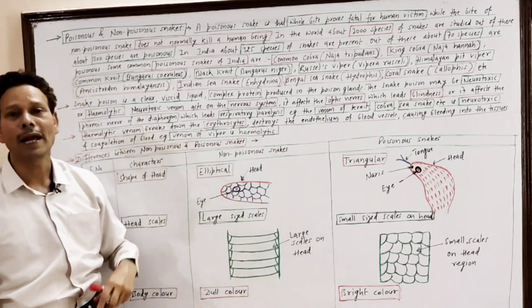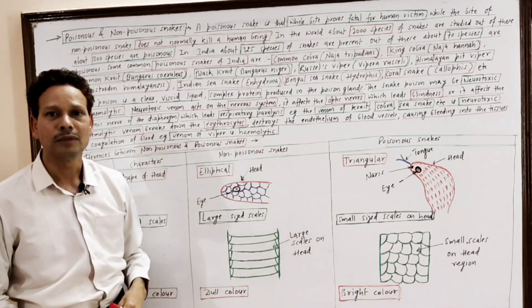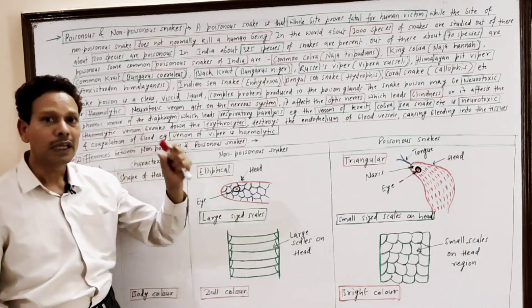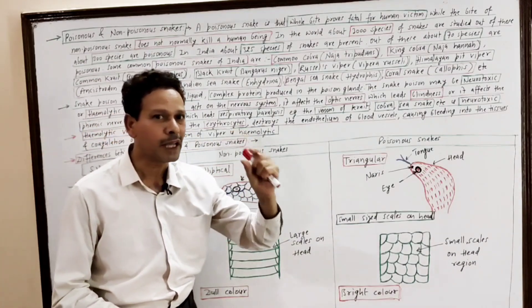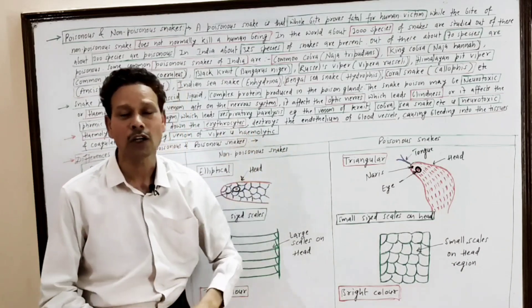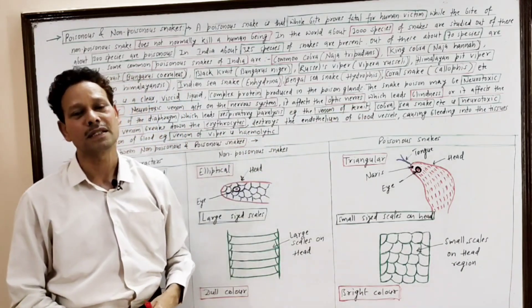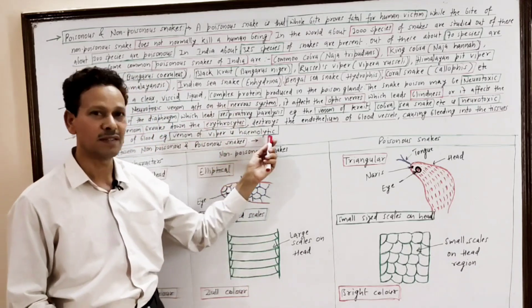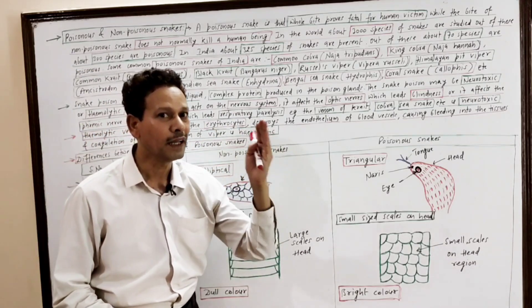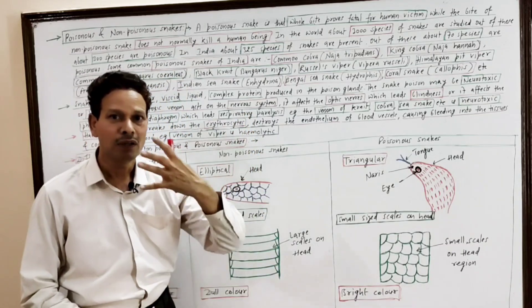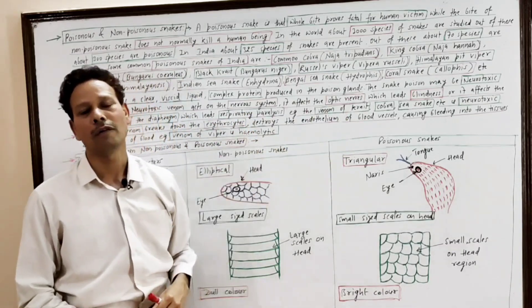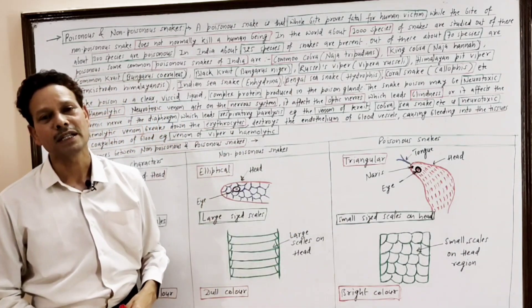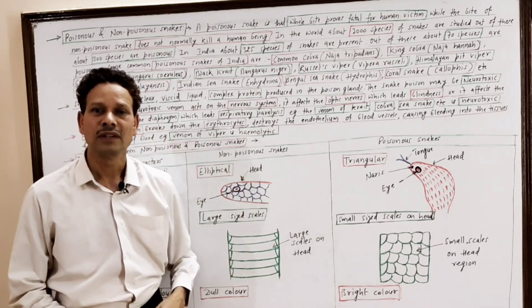While the hemolytic venom or poison is commonly reported in viper and pit viper. Note down hemolytic: it means the venom causes breakdown of RBCs, erythrocytes get destroyed. This hemolytic venom also destroys the endothelial wall of blood vessels.